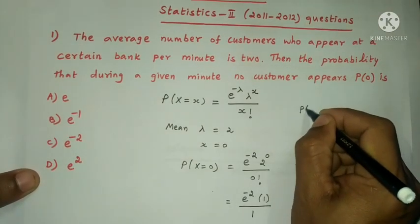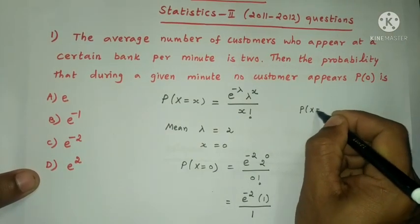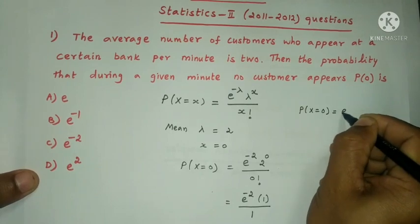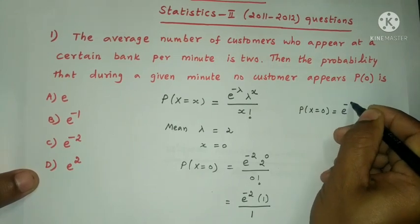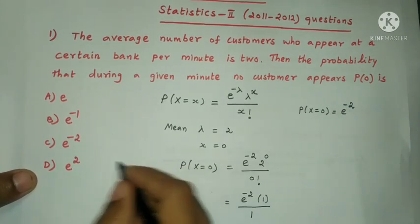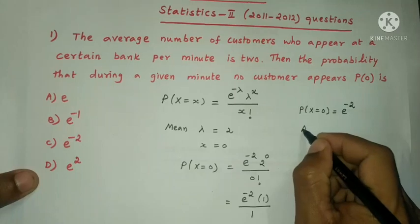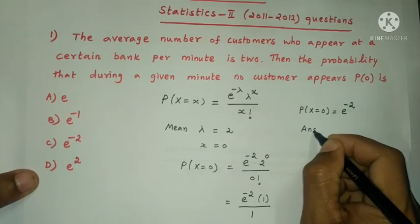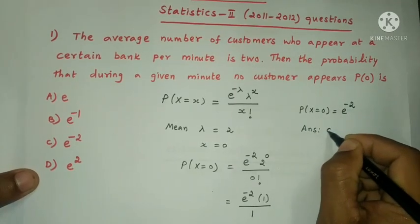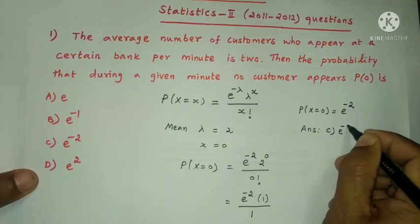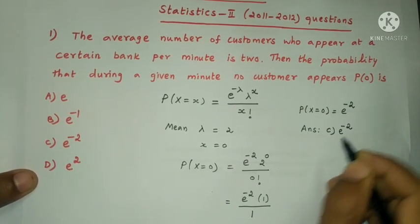P of x equal to 0 is equal to e power minus 2. So option C is the answer. The answer is option C: e power minus 2.